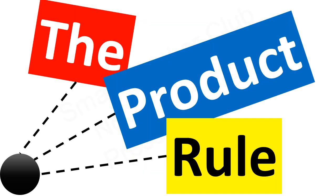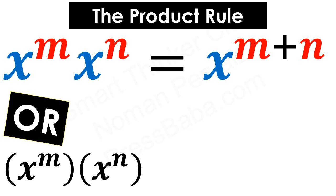Next topic is the product rule. The product rule says that if we have a product of multiple values where their bases are the same, then their powers will be added. In this case, x raised to the power m multiplied with x raised to the power n — since the bases are the same, adding powers gives x raised to the power m plus n.